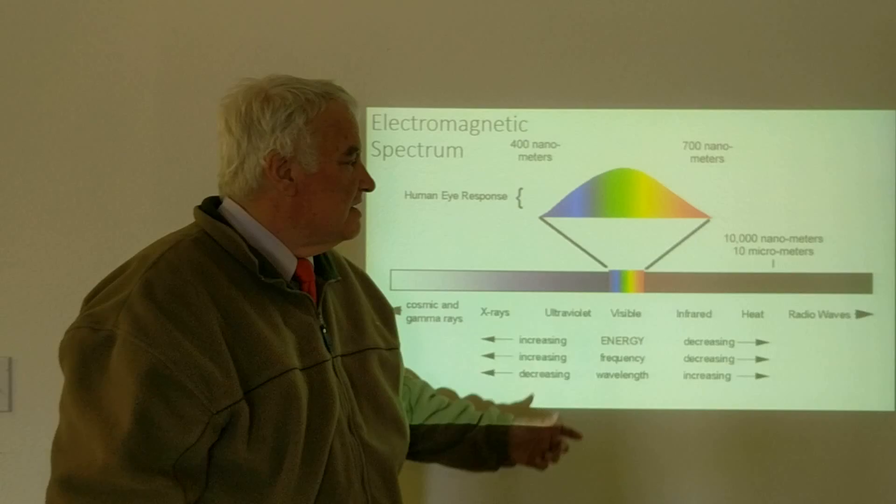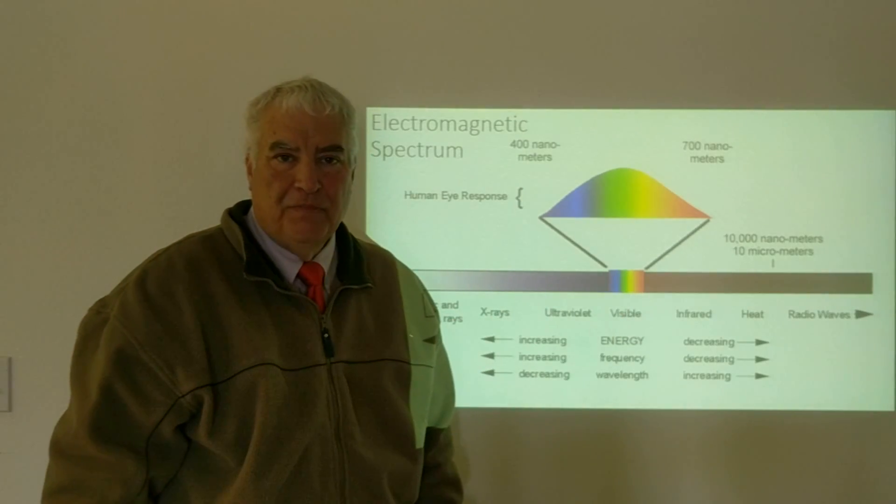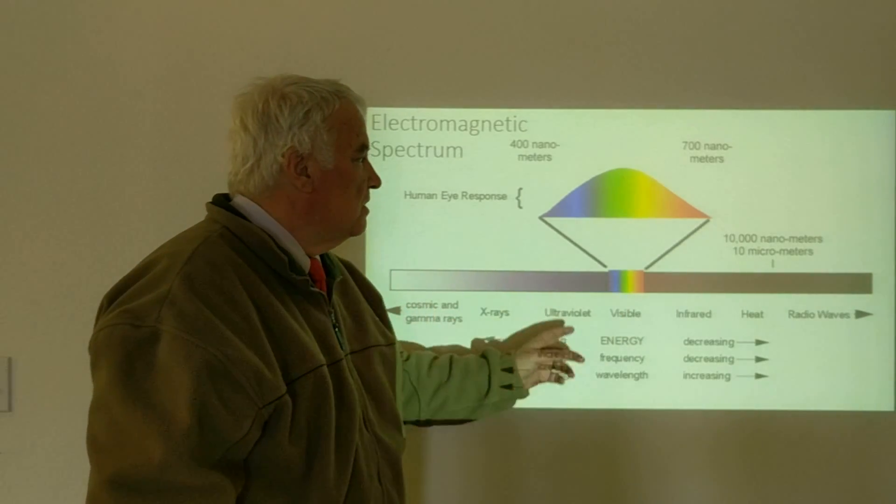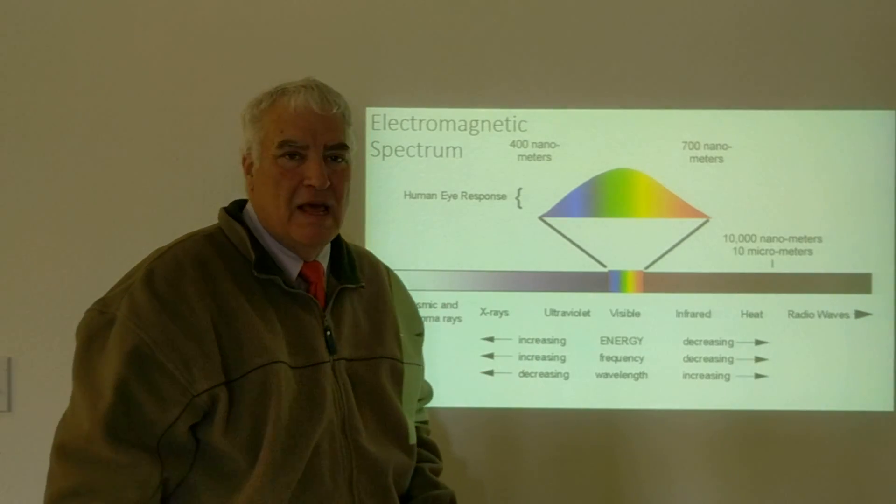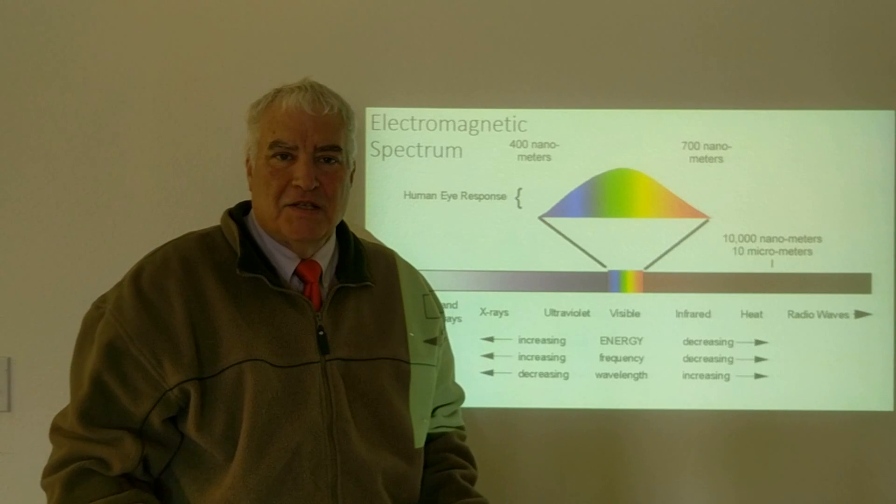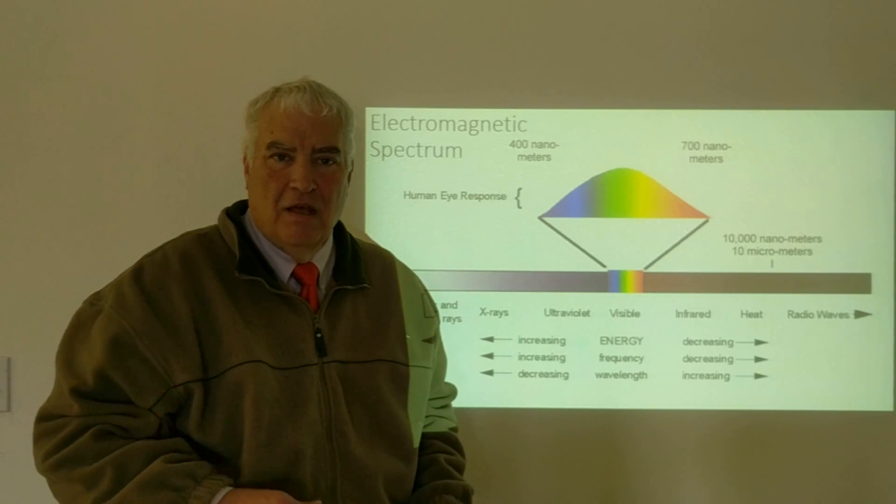The part of the spectrum that we see is actually very narrow and it covers the colors from 400 nanometers to 700 nanometers. It's not a coincidence that the light the human eye is able to detect is very similar to the Sun's emission of light.